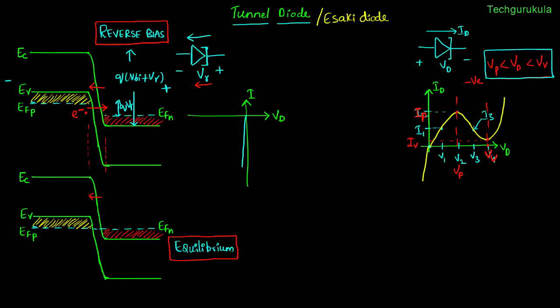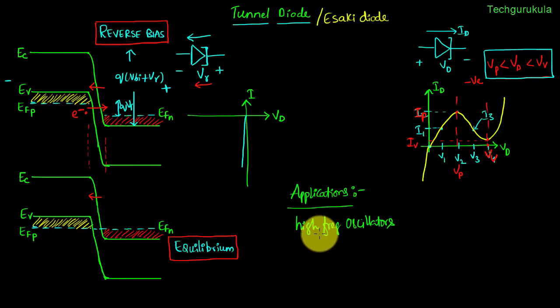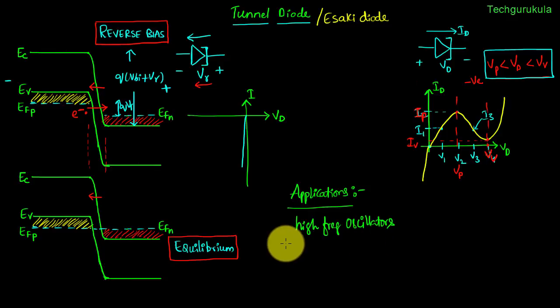So the complete IV characteristics of the tunnel diode look like this — combining forward and reverse bias behavior. Regarding applications: because of its small-signal negative resistance, the tunnel diode can be used in high-frequency oscillators. It also responds very quickly, making it suitable for very high frequencies. Additionally, tunnel diodes are very reliable — the one first made in 1957 still shows almost the same characteristics today — and they are highly resistant to radiation.